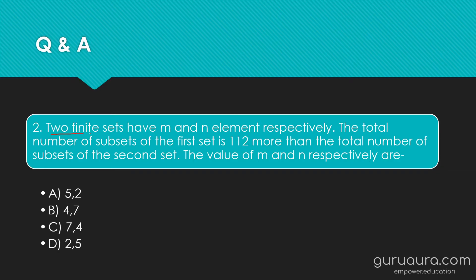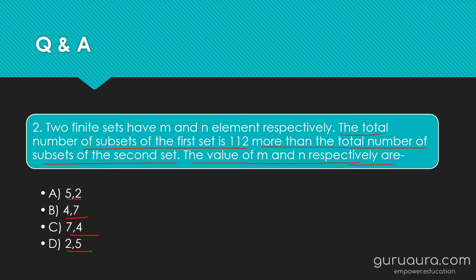Two finite sets have M and N elements respectively. The total number of subsets of the first set is 112 more than the total number of subsets of the second set. The value of M and N respectively are: (A) 5,2  (B) 4,7  (C) 7,4  or (D) 2,5. Pause the video and try to solve it.